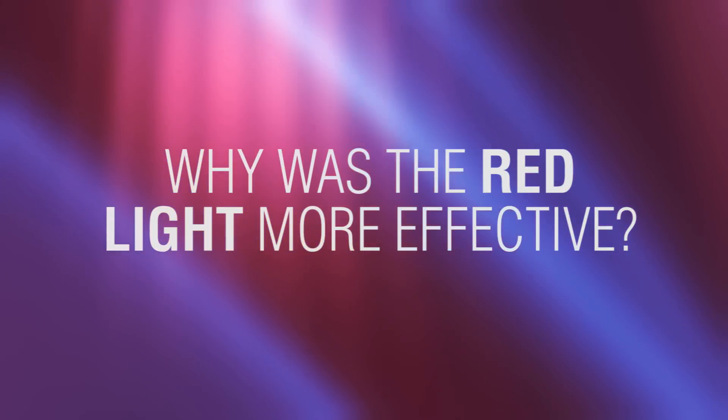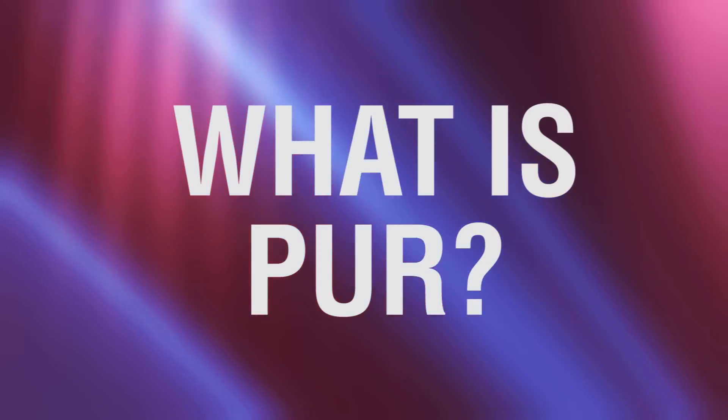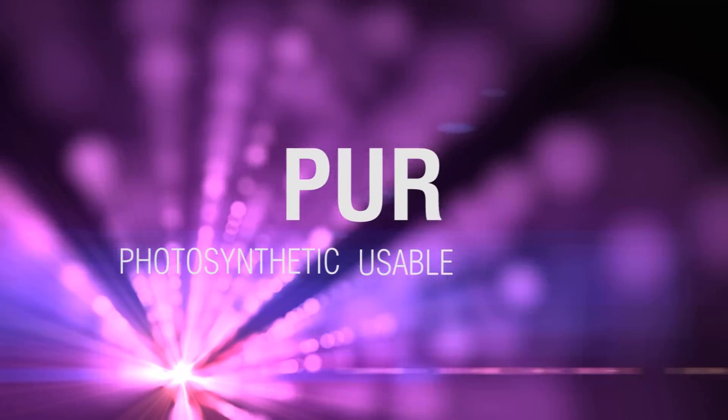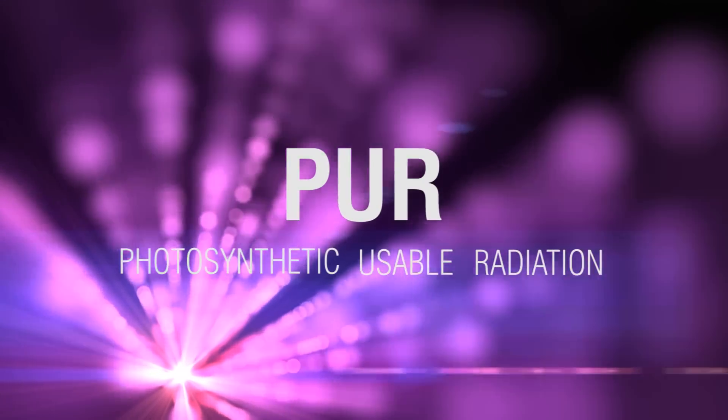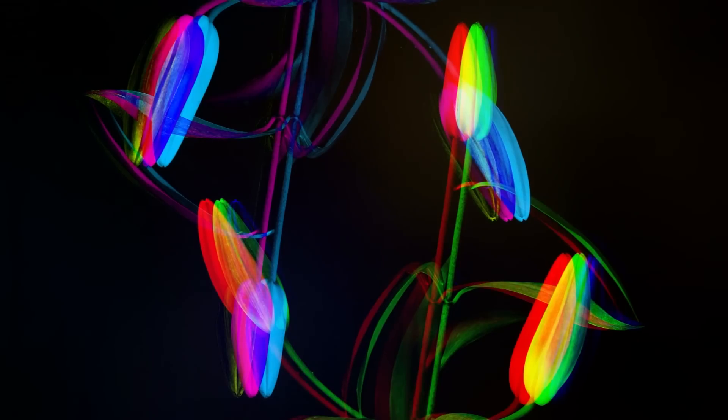So why was the red light more effective? To understand this, we have to understand what PER is. PER stands for Photosynthetic Useful Radiation. PER is the usable portion of light that plants use to achieve photosynthesis.